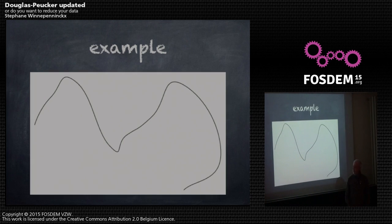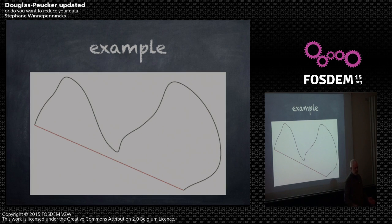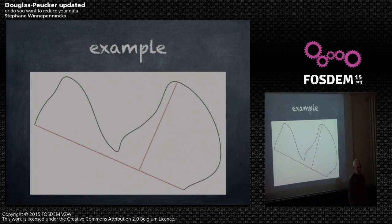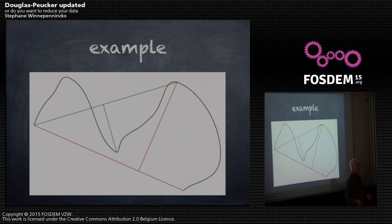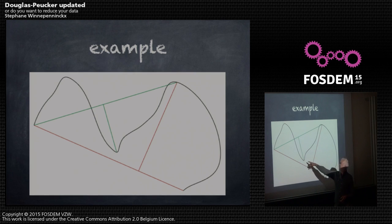Here is an example of a polyline and I'm applying the Douglas-Peucker algorithm. The red line is my baseline and I'm looking for the point that is at maximum distance from the baseline — that's the point up there. I keep that one and do it again with the green baseline, search for the biggest distance, keep that point, and do the same on the other part, again and again.